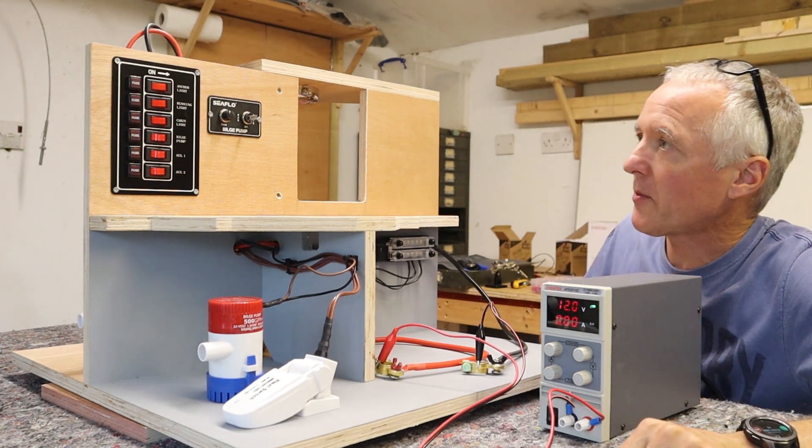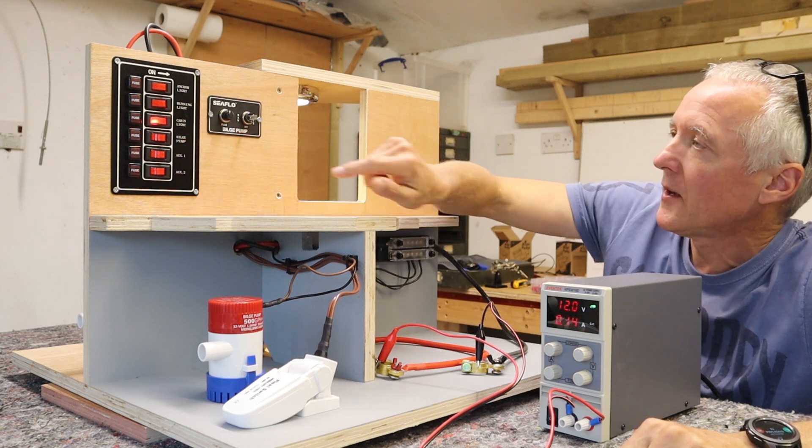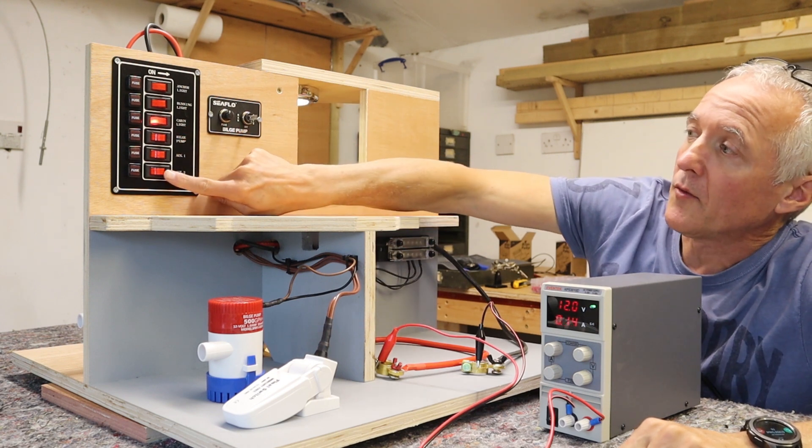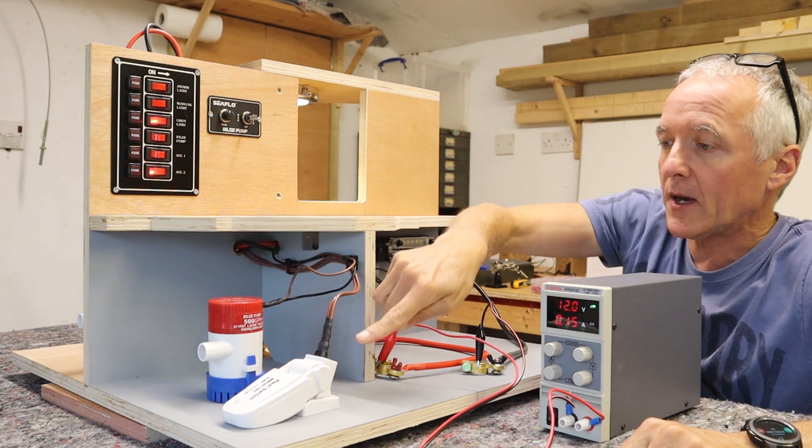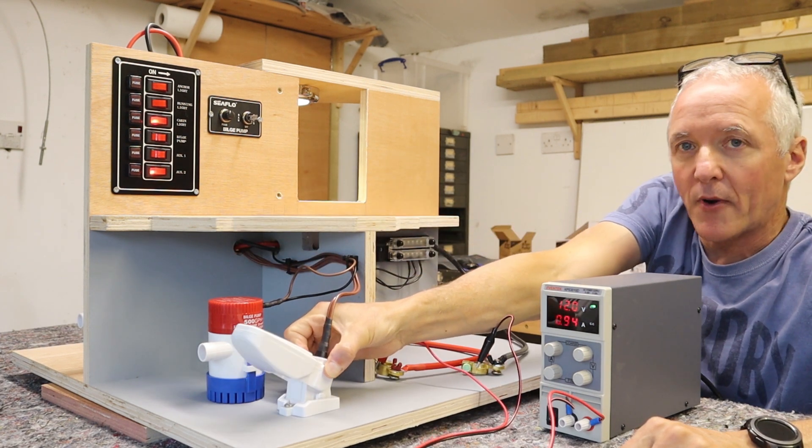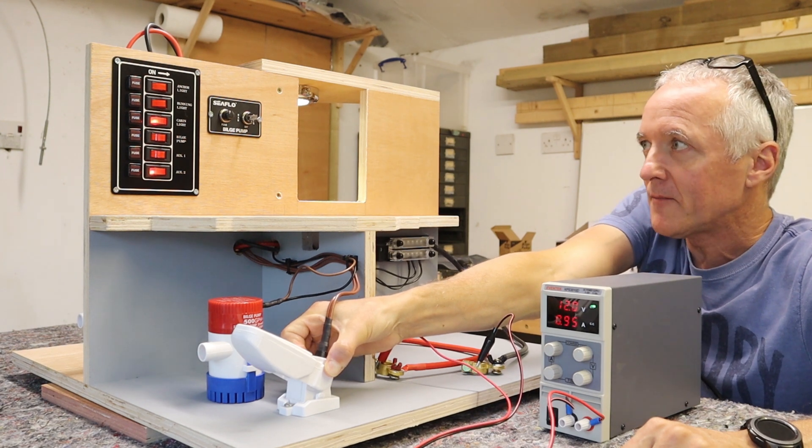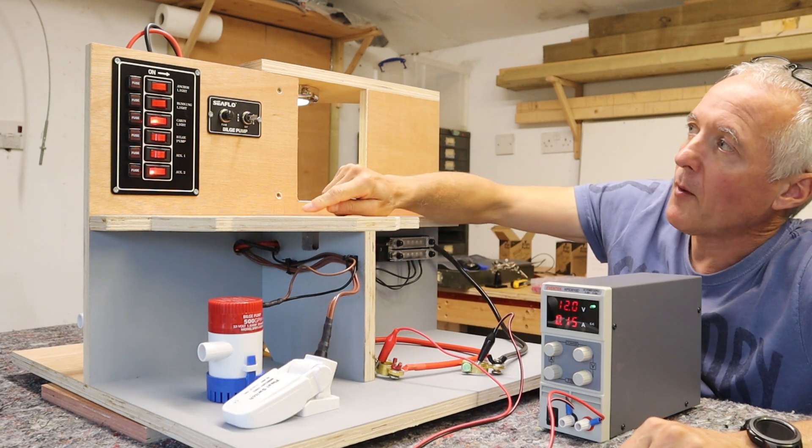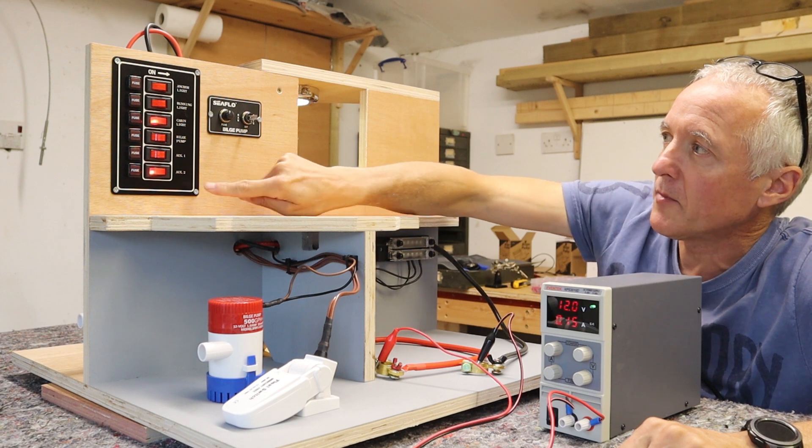Now I can turn on the power supply which is going to give us the 12 volts to the system. And now we've got three things up and running - we've got the cabin light, in here we've got the first bilge pump we did which is the manual bilge pump connected up to the float switch, which if I just operate the float switch that comes on.